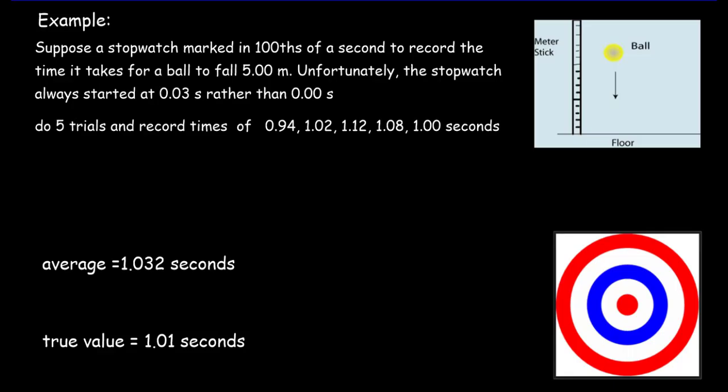Let's do a numerical example to make more sense of all this. So we're going to drop a ball from five meters. It's in a vacuum environment. We're simply using a stopwatch to time it to fall those five meters. And we do five trials, and we get these values here. Now, unfortunately, there was a systematic error. The stopwatch always started at 0.03 seconds. That means all of these values are going to be too high by 0.03 seconds. And when we take an average of those values, we get 1.032 seconds.